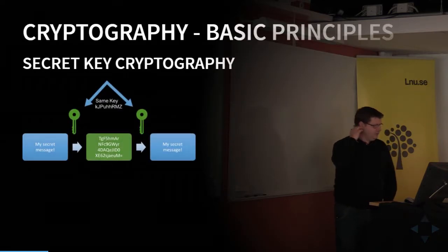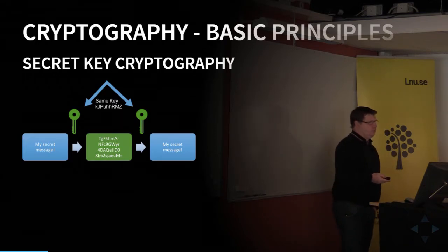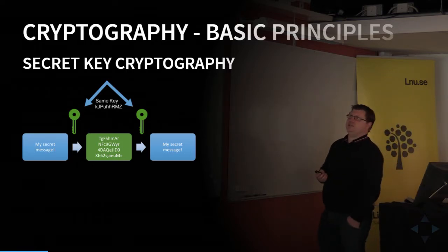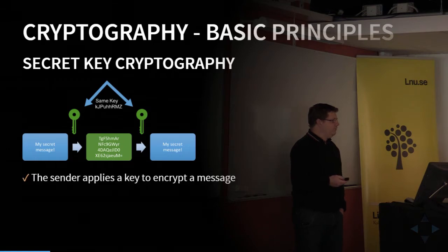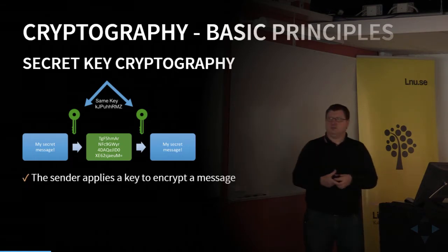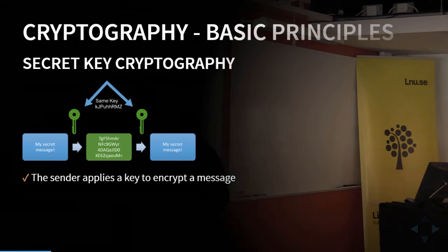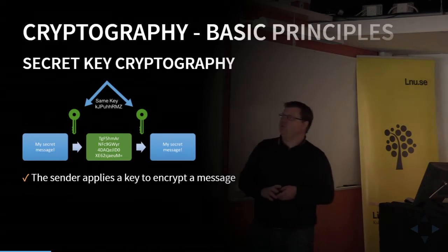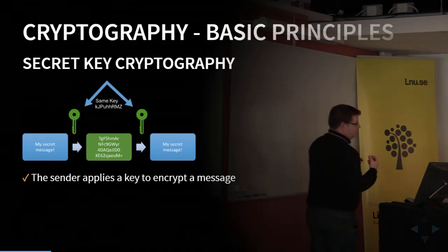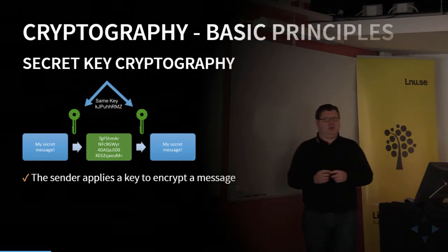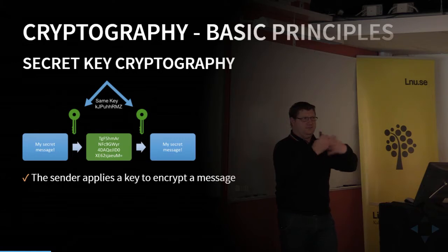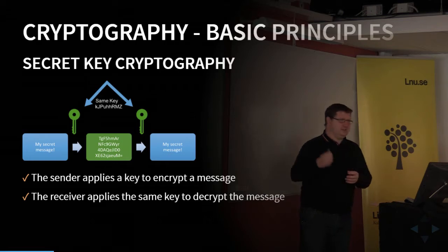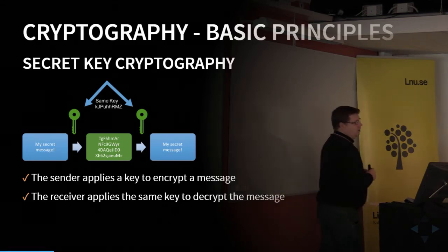We can do this with different techniques. The simplest one is some sort of secret key. The sender has a message he wants only the receiver to be able to read, so he encrypts it with a key — an algorithm that transforms the message according to that key. The receiver has the same key and can decrypt the message.